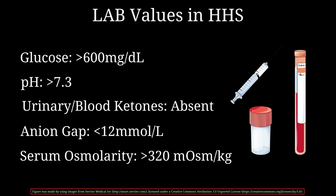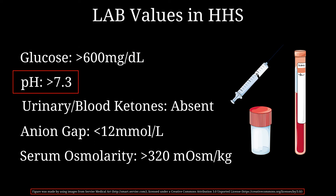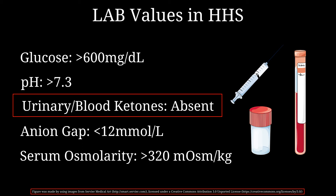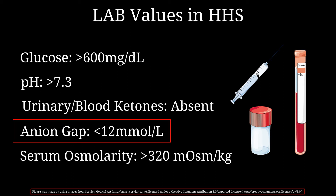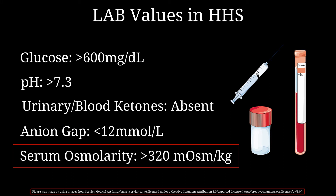Laboratory findings in this type of patient will show very high blood glucose levels, usually more than 600 mg per deciliter. Since no acidosis occurs, pH will be more than 7.3. Urine and blood ketones will be absent, as ketone bodies are not formed due to the minimal amount of insulin still present. Anion gap will be less than 12, and serum osmolarity will be greater than 320 milliosmoles per kilogram.